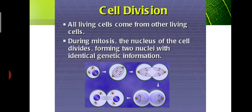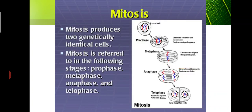During mitosis, the nucleus of the cell divides, forming two nuclei with identical genetic information. Mitosis takes place in five steps. The five stages are: first interphase, then prophase, metaphase, anaphase, and telophase. We will discuss them one by one in detail.